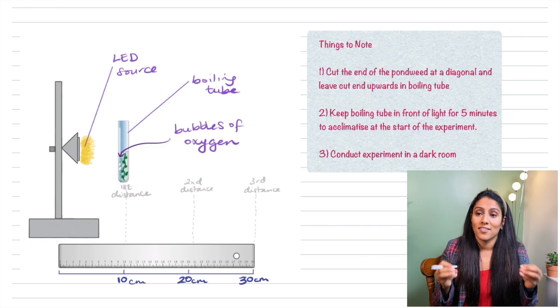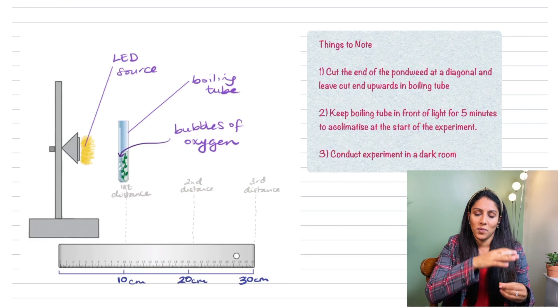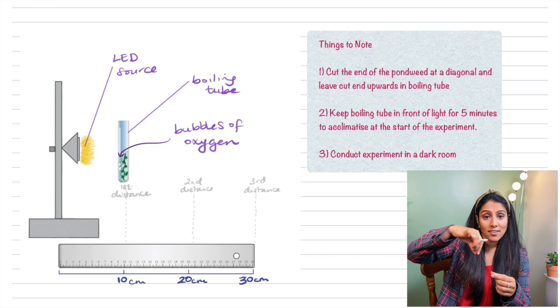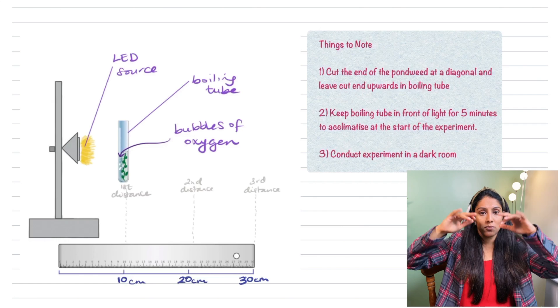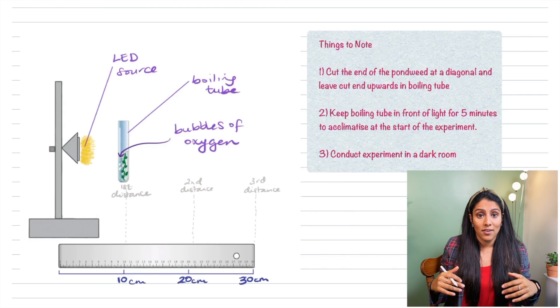So some things to note with this experiment: you must cut the pondweed at a diagonal and leave that diagonally cut pondweed at the top and this allows the oxygen bubbles to be released very easily.